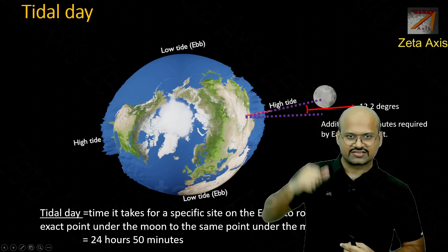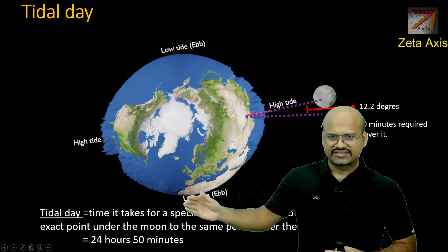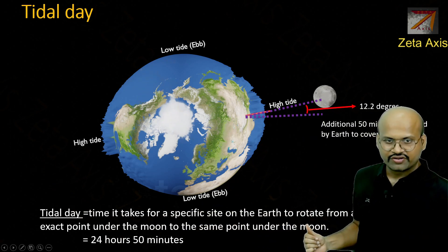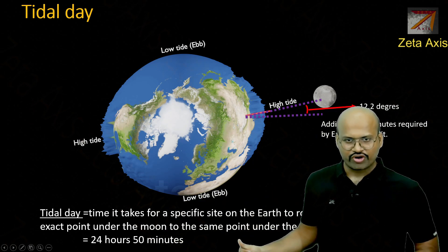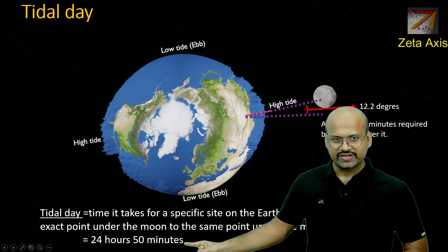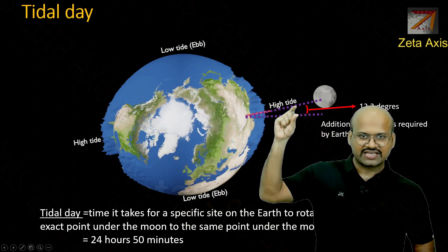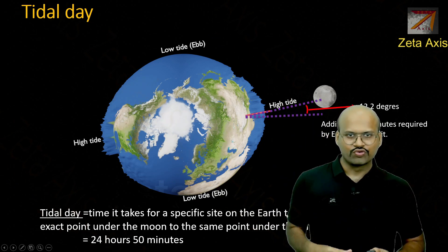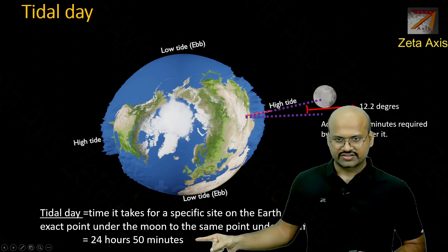The point has to cover this additional distance. The tidal day is defined as the time it takes for a specific site on the earth to rotate from a point directly under the moon back to that same point under the moon again. This is 24 hours and 50 minutes — 24 hours for one full rotation and 50 minutes to cover the additional distance because the moon has also moved.